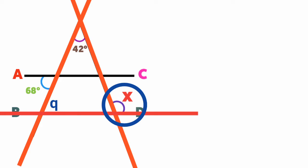Let's label this angle as angle Q. Write it down, so we're going to have angle X is equal to Q plus 42 degrees.